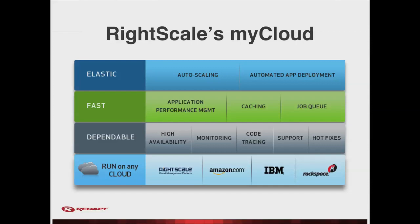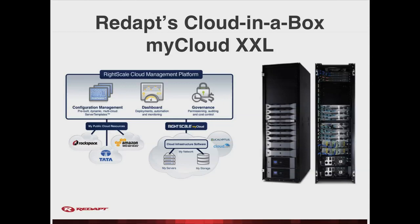Using something like capacity planning to figure out where your resources will come from, doing your vendor selection — whether it's Eucalyptus or cloud.com — getting it up and running, and then dropping the RightScale management layer on top of it. We also have our XXL cloud-in-a-box concept. If anyone has questions about how we build this out or what it looks like, please come up and talk to us. Thank you.